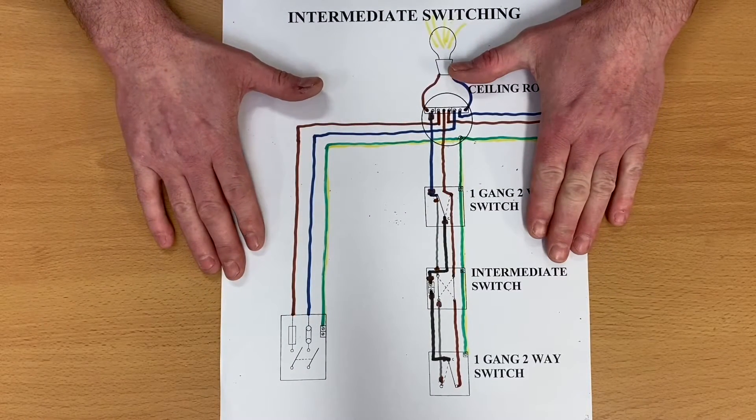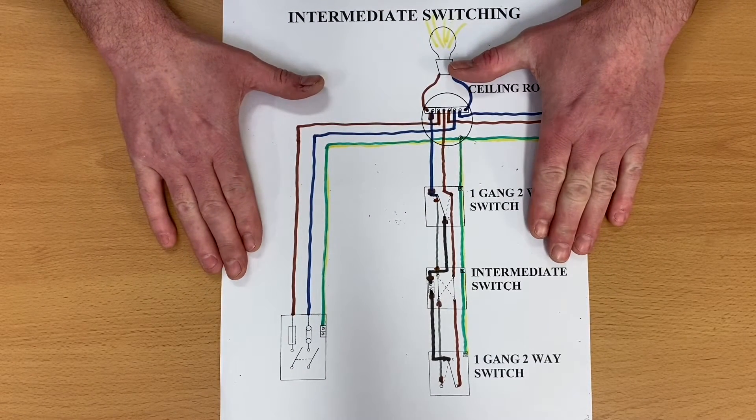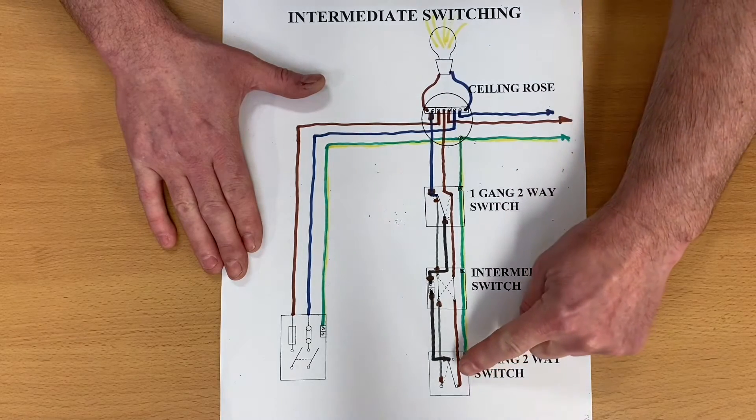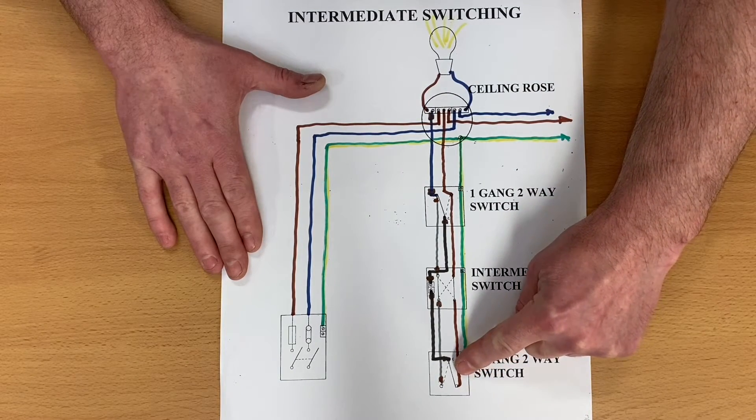So I've come back to my two-way and intermediate wiring diagram because I was asked a question. If, for instance, this last switch, I wanted to continue on to another switch.